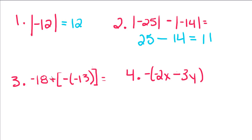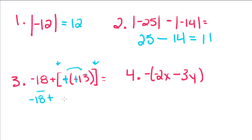These are brackets — that means you do what's inside the brackets and then add. So I'm going to take negative 18 plus — I have negative 13, but this minus outside tells me to take the opposite value, so this becomes positive. So I have plus 13. Negative 18 plus 13 gives me negative 5.